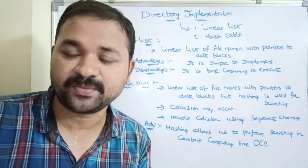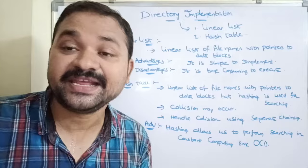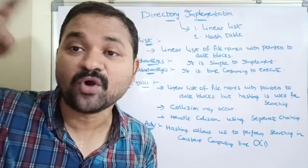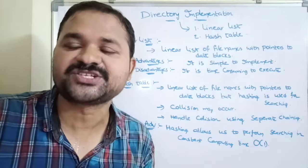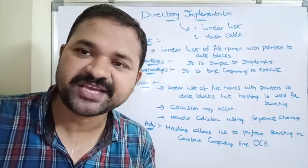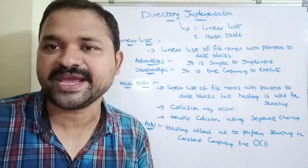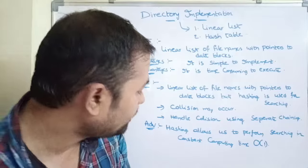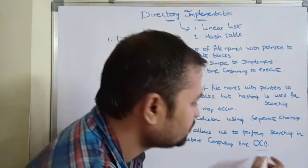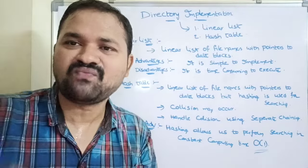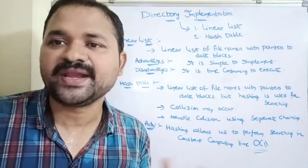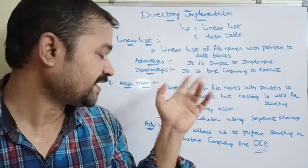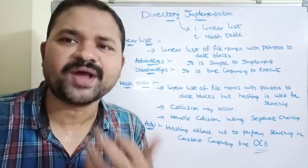With hashing, only one comparison is needed to perform the searching. If you take linear search, the worst case time complexity is O(n). If you take binary search, the worst case time complexity is O(log n). Whereas with hashing, the time complexity is O(1), meaning with only one comparison we can search for the corresponding file.